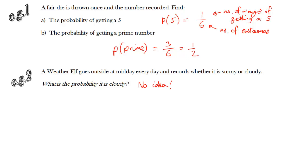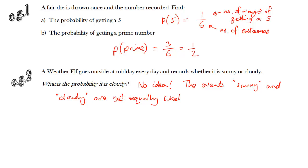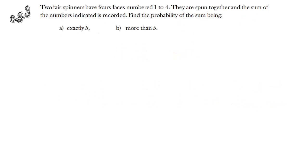Here's a counterexample: a weather elf goes outside to record whether it's sunny or cloudy. We can't use this formula to find the probability that it's cloudy because the two events — sunny or cloudy — are not equally likely. Just because there are two outcomes doesn't mean each has probability one half. In the UK, it's probably more likely to be cloudy, so don't assume equally likely outcomes unless you know they are.